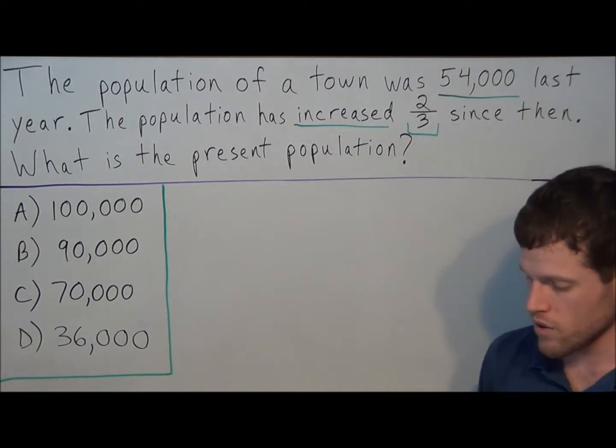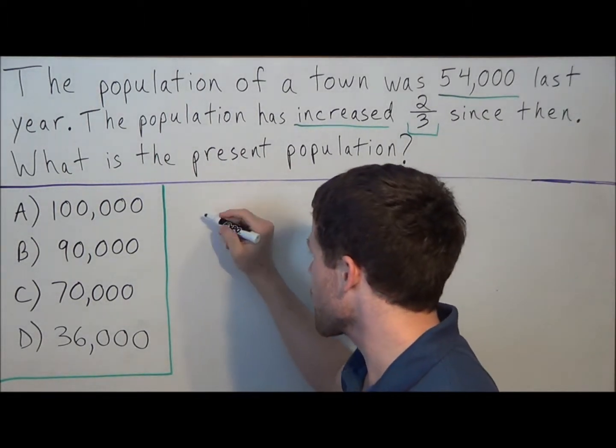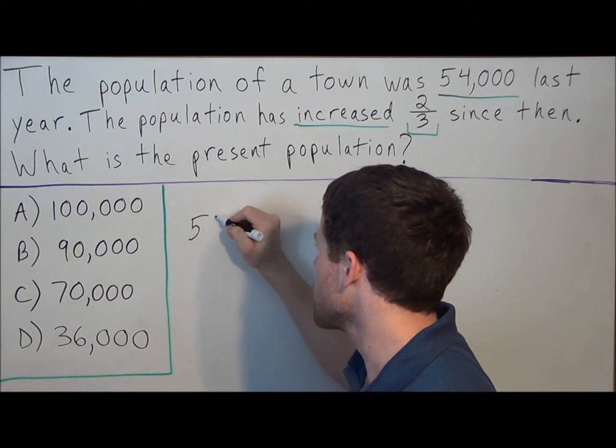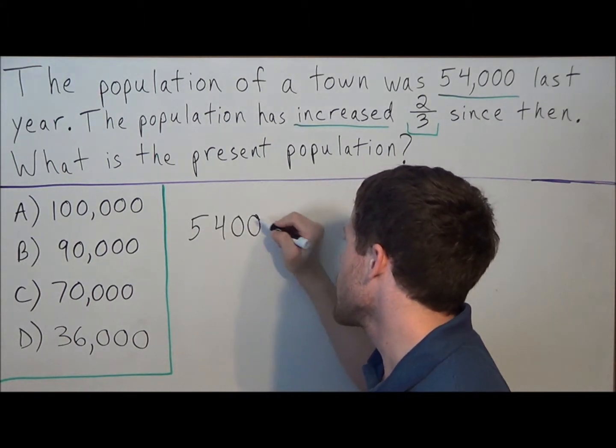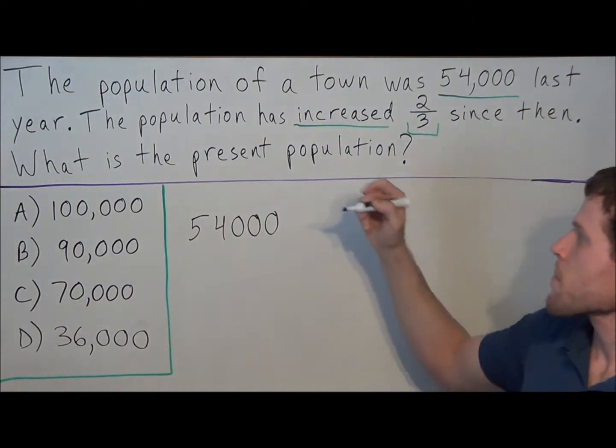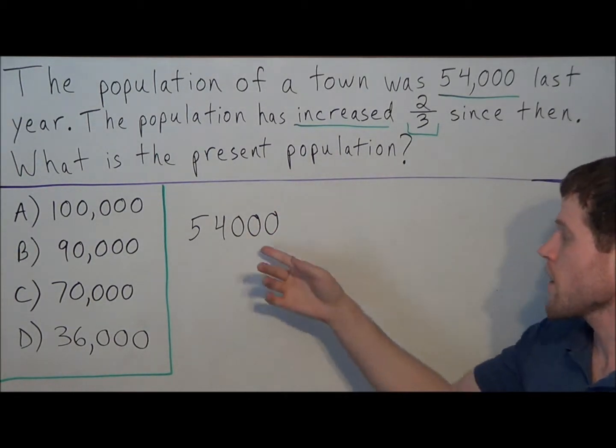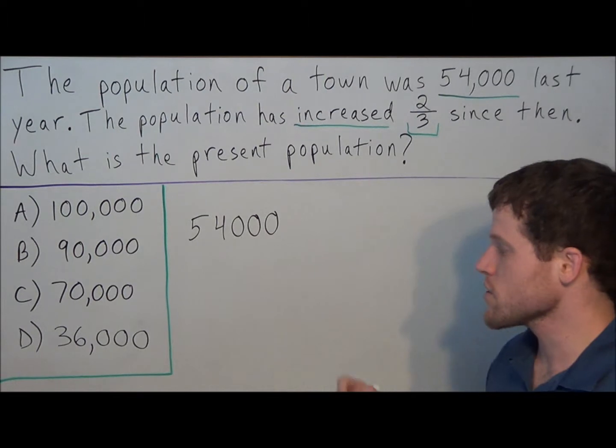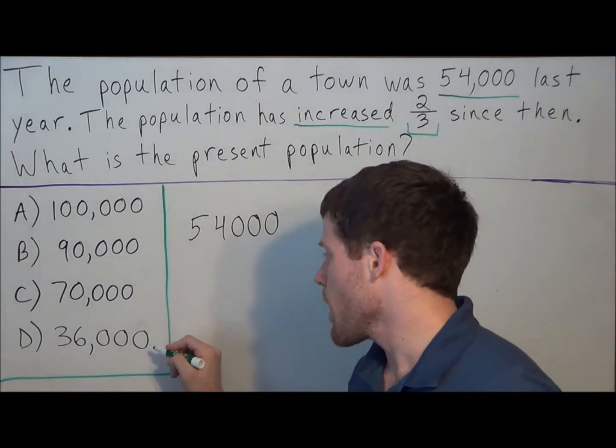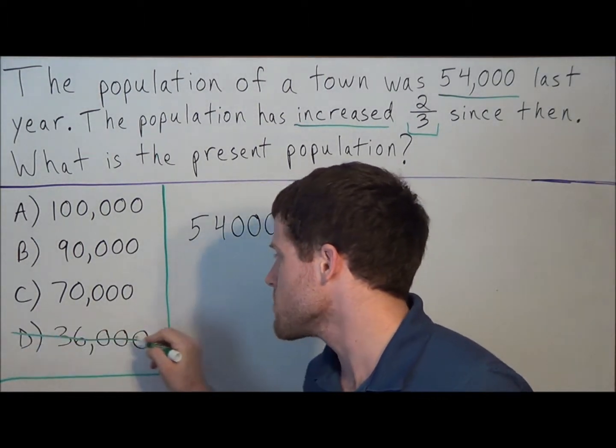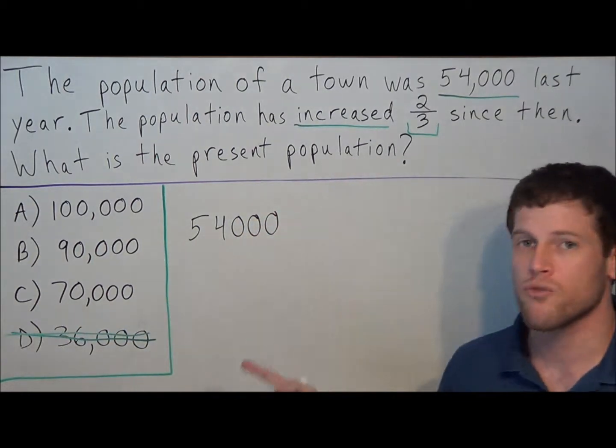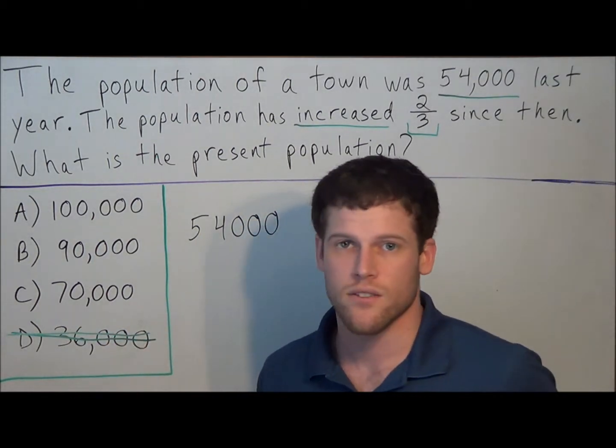So what we want to do is we look at this, there are 54,000 people, and if you think about it, if the population is increasing, that means our answer has to be greater than 54,000. So the first thing we could do is go to the answer key and cross off 36,000 because our answer needs to be greater than 54,000, and 36,000 is less than that.